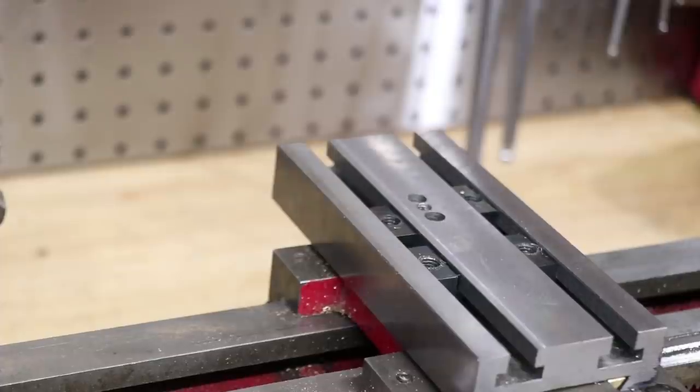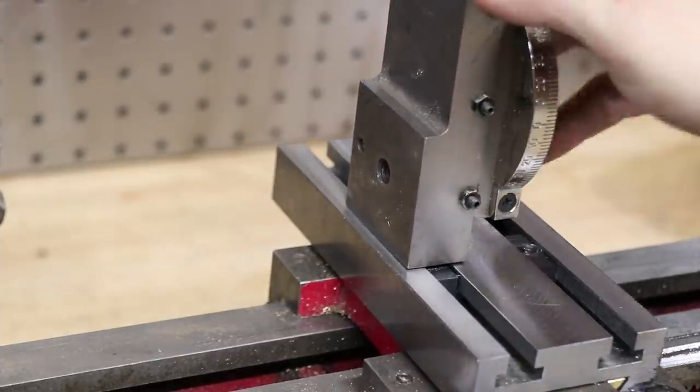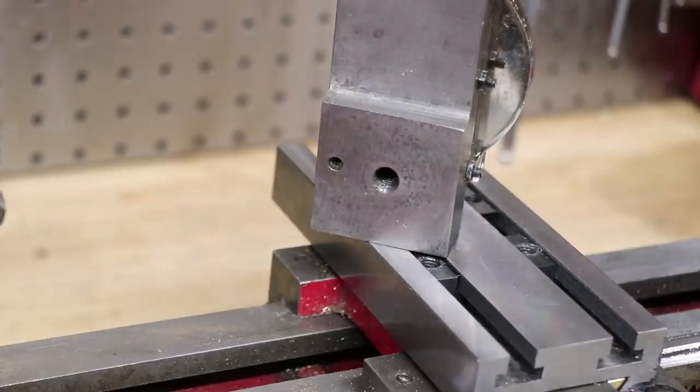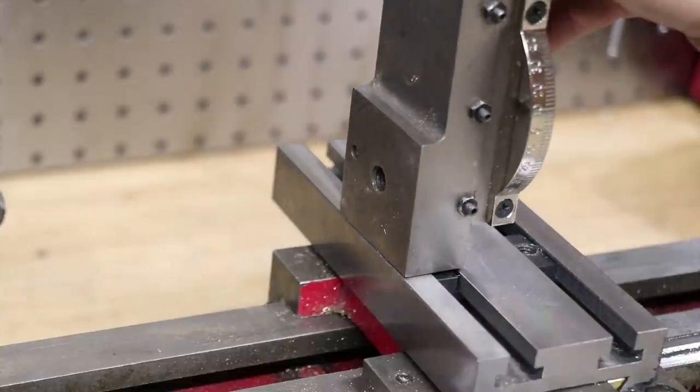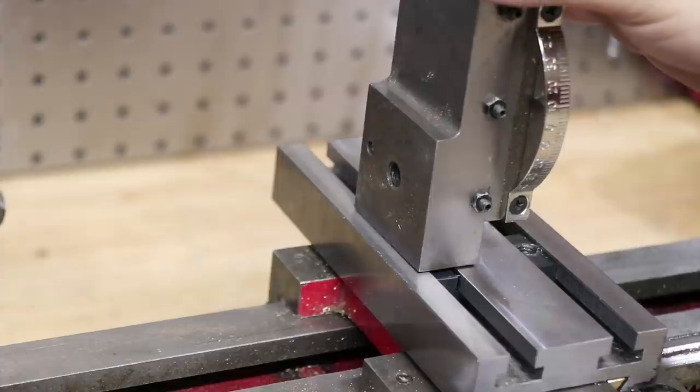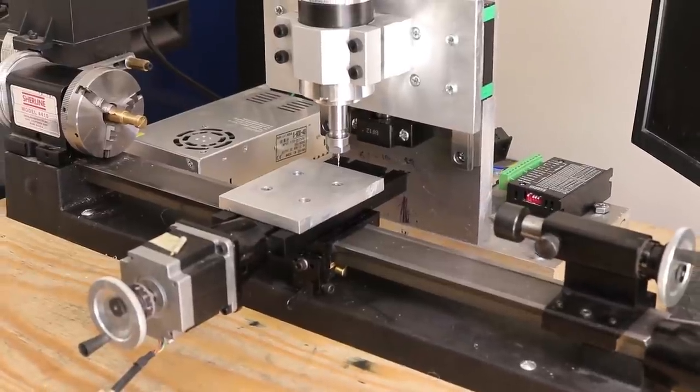My plan is to add a milling attachment, and I'm not talking about adding a compound slide vertically with a vice attached and using the lathe as a sort of makeshift mill. I'm talking about adding a vertical axis with a spindle, kind of similar to those lathe mill combos that you might see.